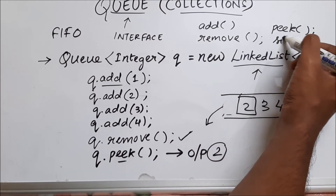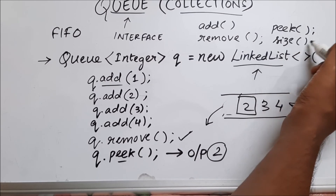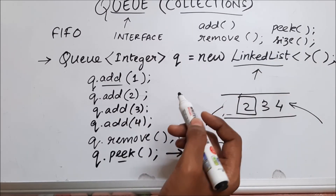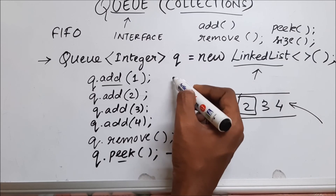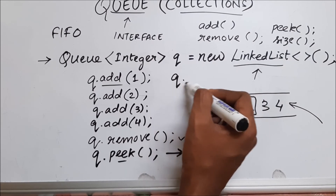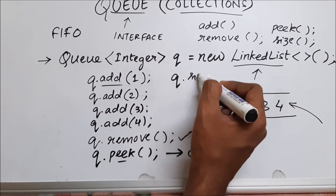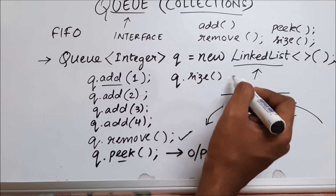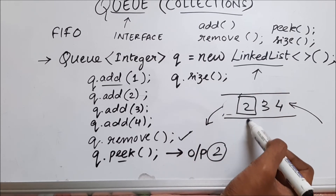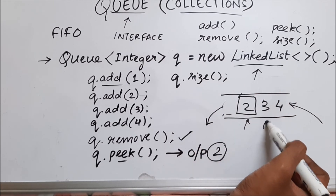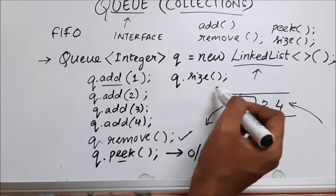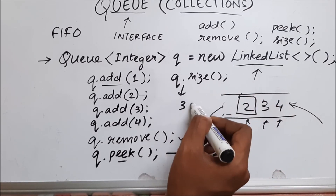Let us see one more function, which is called size. This function, as the name suggests, gives you the size of the queue. If I say queue.size(), and in this queue we have three elements — two, three, and four — the output it will give is three.